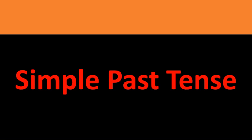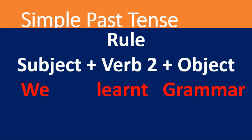First of all, simple past tense. When do we use simple past tense? Simple past tense is used for actions that started and finished at a specific time in the past. The rule for simple past tense is: subject + verb in the second form + object. For example, 'We learnt grammar.' Here 'we' is the subject, 'learnt' is the verb in the second form, and 'grammar' is the object.